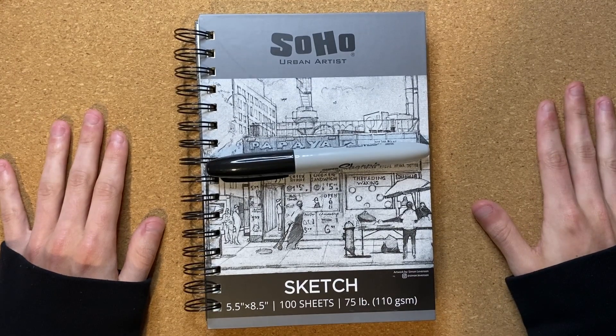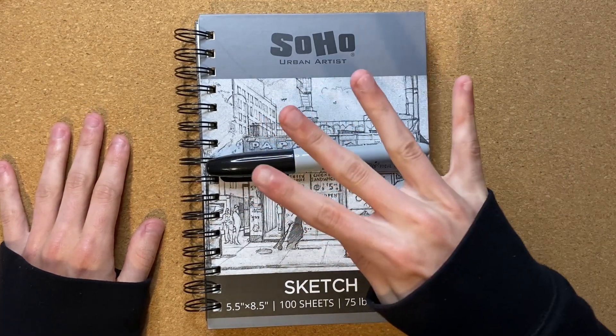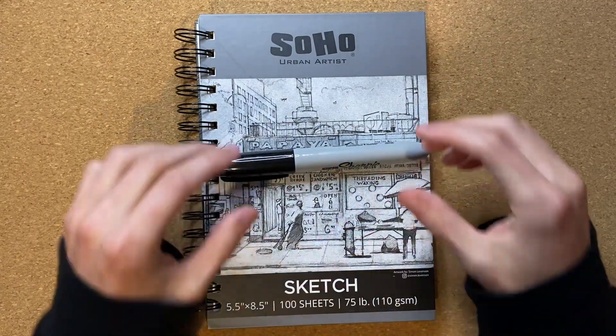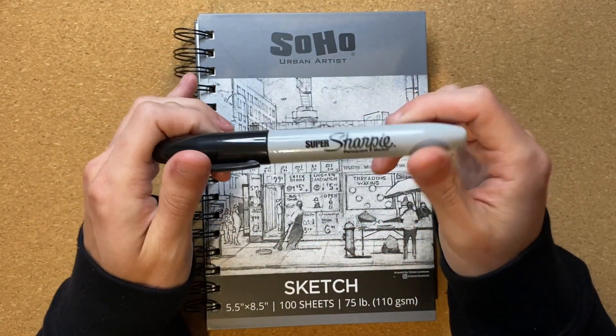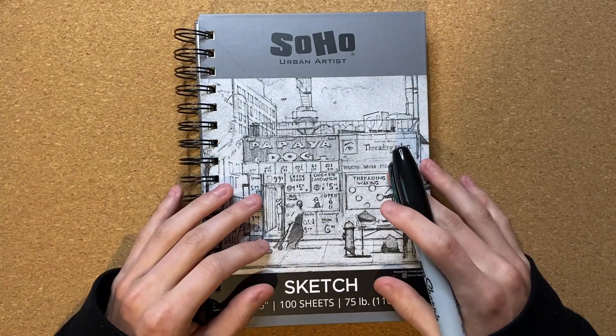Alrighty, so today is day number four of fish week, and as such, today I am going to be drawing a fish with a Super Sharpie permanent marker in my Soho Urban Artist Sketchbook.